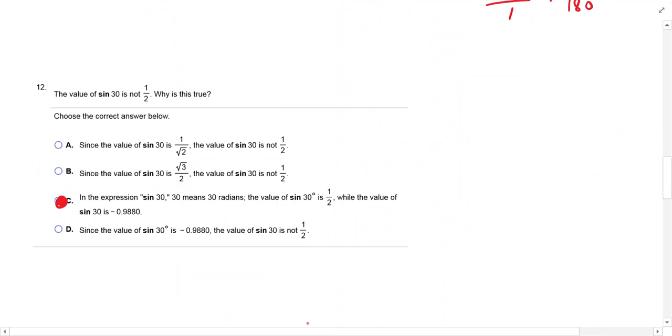The value of sine 3 theta is not 1 half. Why is that true? It's not 3 theta. Sine 30 means, now, here's what we have to note. When they say it like that, sine 30, if it does not have that degree sign, then it's in radians. And so, in the expression, 30 means 30 radians. The value of sine 30 degrees is 1 half, while the value of sine 30 is negative 0.9880. So, if you do not see the degree symbol, you have to assume that it is in radians.